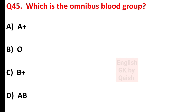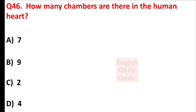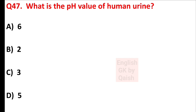Which is the universal recipient blood group? Answer is option D — AB. How many chambers are there in the human heart? Answer is option D — 4. What is the pH value of human urine? Answer is option A — 6.